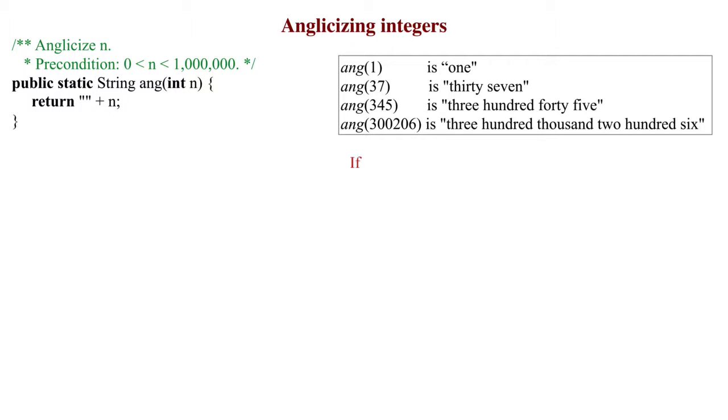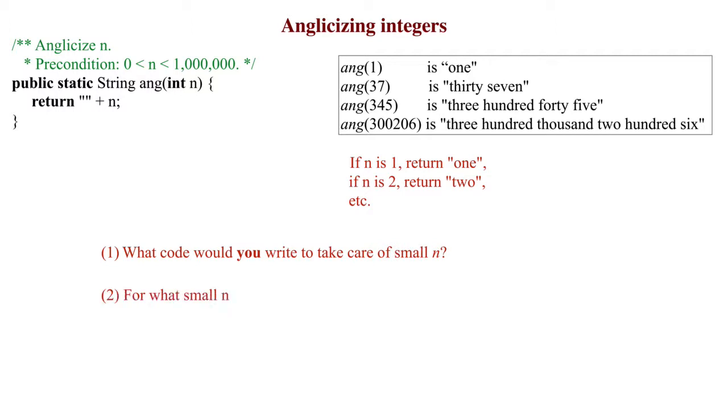We're ready to think about writing the body of function ang. For small numbers 1, 2, 3, there seems to be no way to calculate the answer. If n is 1, return 1. If n is 2, return 2, and so on. Here are two questions for you: What code would you write to take care of these small n, and for what values of n would you do this? Stop the video and answer these questions for yourself.